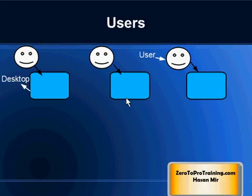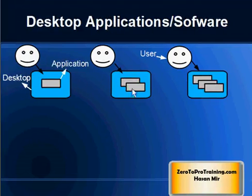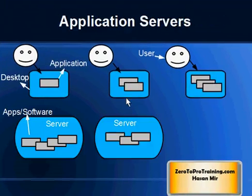All users are either employees or contractors of a company. A user will be interacting with the software through a desktop computer or laptop. The gray boxes within the blue ones represent applications or software that users are using to serve their job role. Users would be using different applications pertaining to their department and job role.